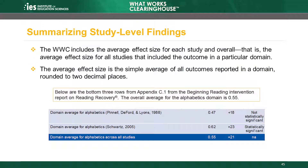As shown earlier in this module, the WWC includes in an appendix of the report the study-level findings that support the summary table found on the first page of an intervention report. For each domain, the WWC presents the average effect size for each study and overall within the domain. We calculate the average effect size across studies by using the simple average. Two studies from the Reading Recovery Intervention Report reported outcomes in the alphabetics domain. For the Pinnell, DeFord, and Lyons study, their average effect size is 0.47, which is a positive 18 improvement index, and the findings were not statistically significant. By contrast, the Schwartz study reported an average effect size of 0.62, an improvement index of positive 23, and was statistically significant. The domain average across all studies is 0.55 with an improvement index of positive 21. The WWC does not calculate the statistical significance of the average across studies.